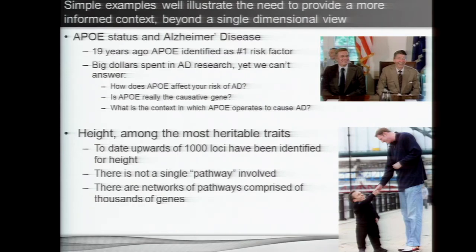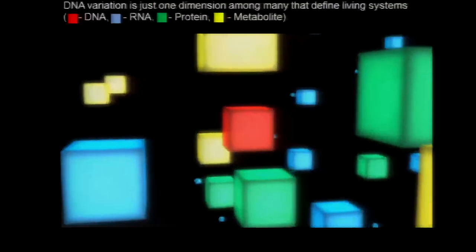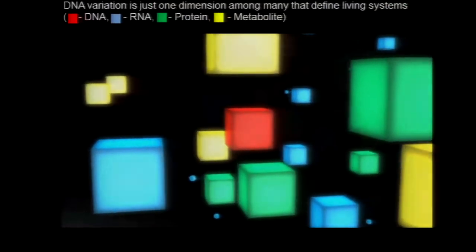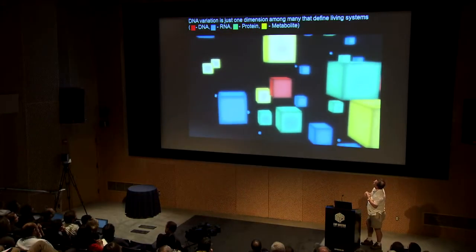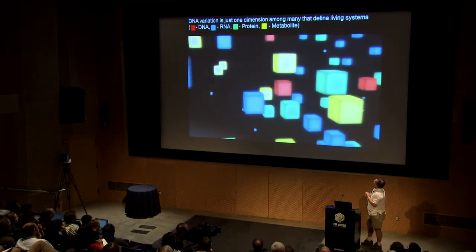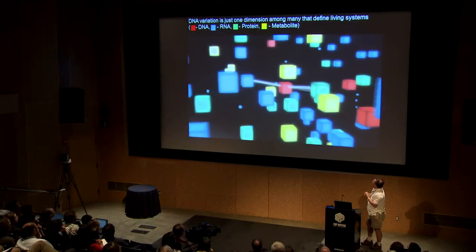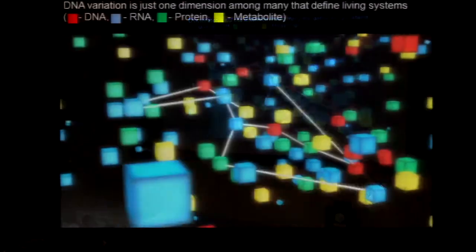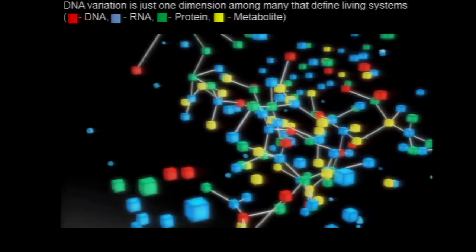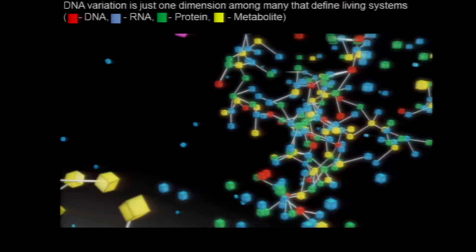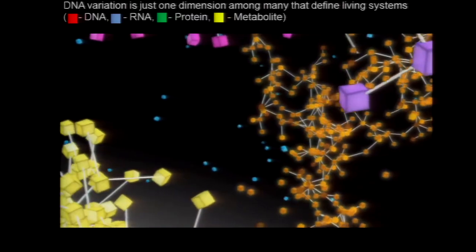This takes us to the point that we're not going to solve these types of disease through linear thinking and one-dimensional views. What we need to focus on is how these variables are interacting. Imagine we have DNA in red, metabolites in yellow, protein in green, and RNA in blue — being perturbed in a system like a cell and connected in very complex ways.